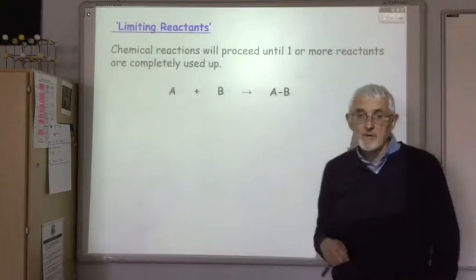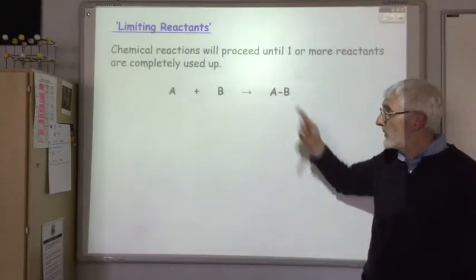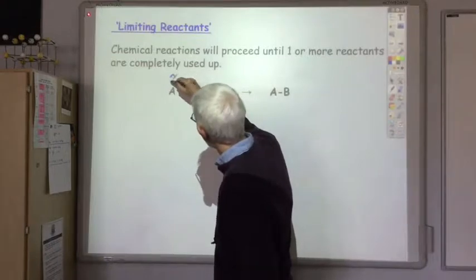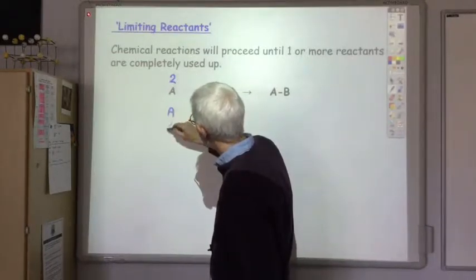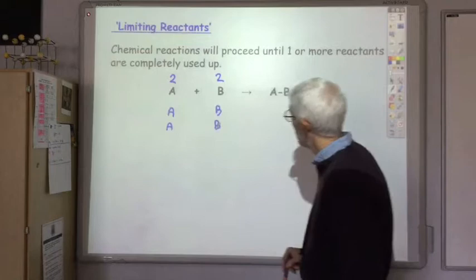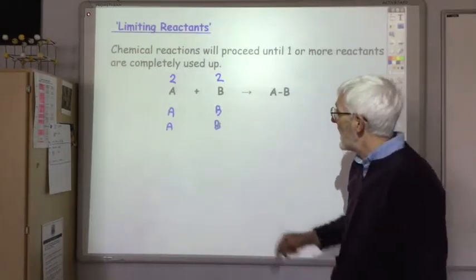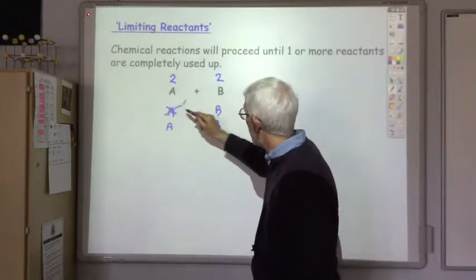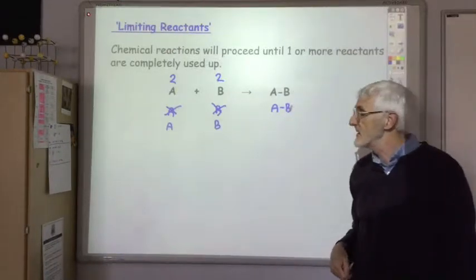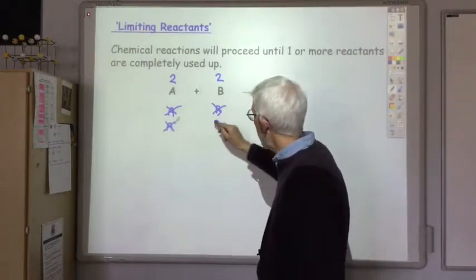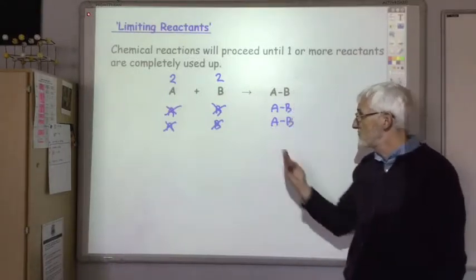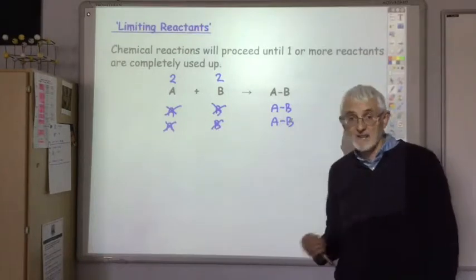Let's look at this simple made-up reaction: A plus B reacts to give you a new compound AB. Say we start off with two moles of A and two moles of B. Mix them all together and A will react with B to give a molecule of AB. Another molecule of A reacts with another molecule of B to produce a second molecule of AB. We've got no more reactants left so the reaction will have stopped.